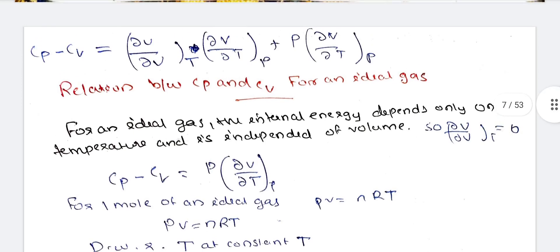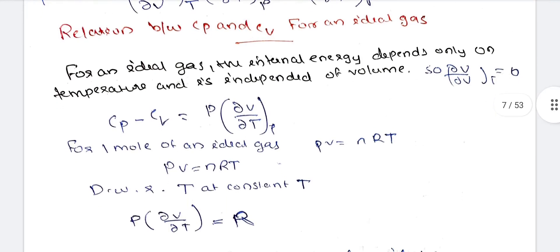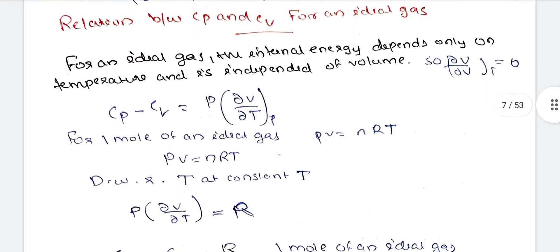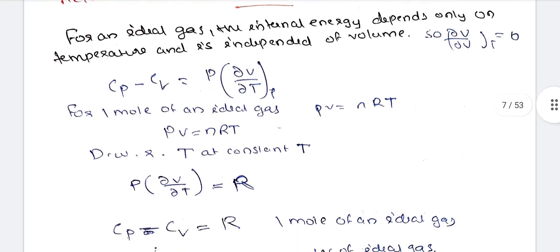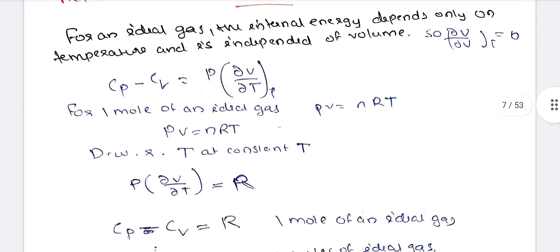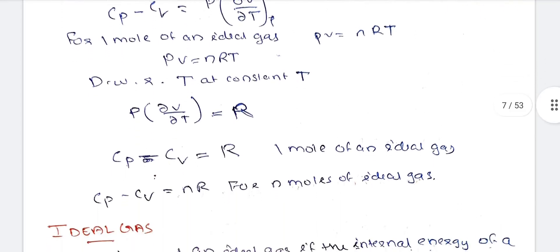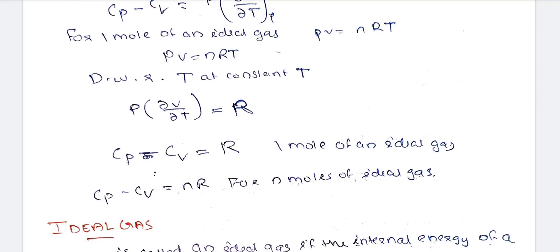In the Cp minus Cv equation, the first term becomes zero since (∂U/∂V) at constant T is zero for an ideal gas. The remaining term is P times (∂V/∂T) at constant pressure. Using the ideal gas equation PV equals nRT, we differentiate and get P times (∂V/∂T) equals R. Therefore, Cp minus Cv equals R.